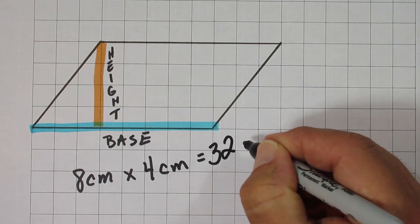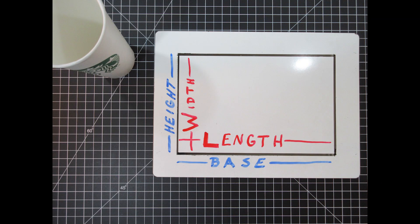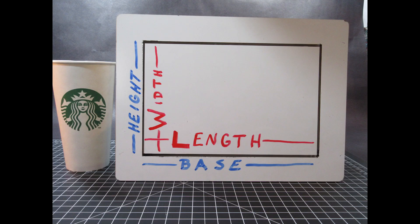You might ask yourself, is length times width the same as base times height? And the answer is basically yes. It depends on your perspective. If we look down at this rectangle, we'd have a length and a width. But if we turn this rectangle vertically, we'd have a base and a height. The length and base are the same. The width and height are basically the same.